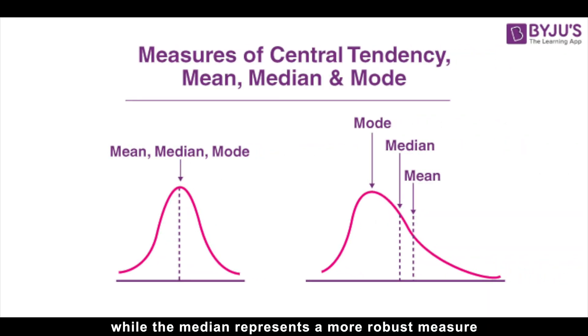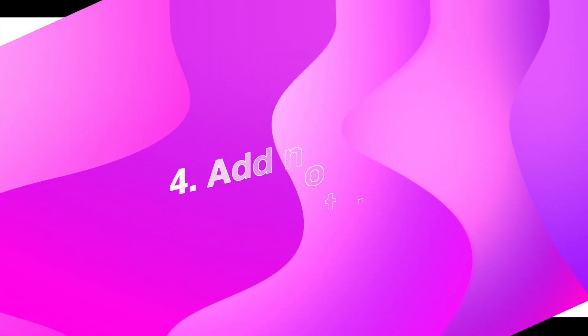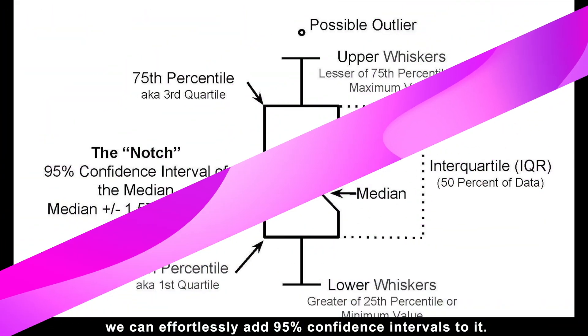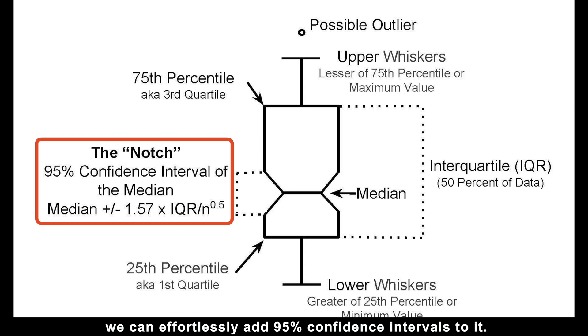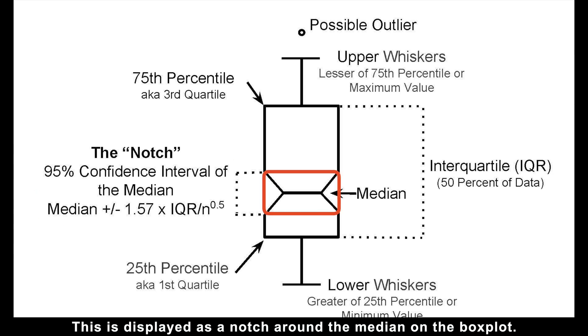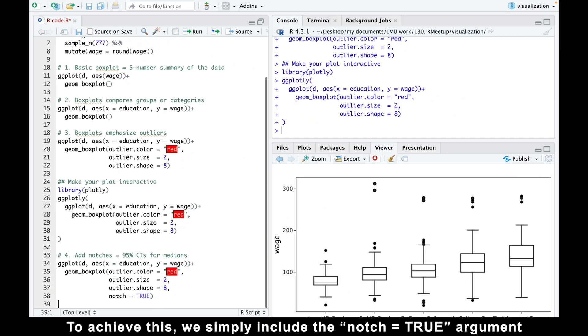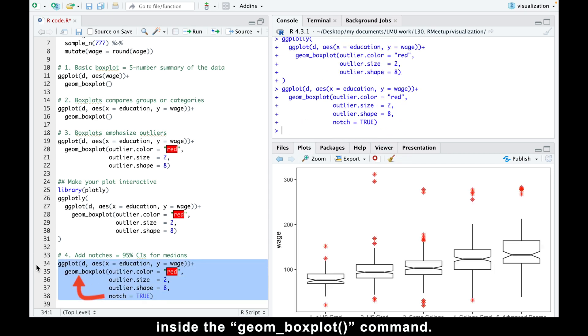Speaking of confidence, while the median represents a more robust measure of central density compared to the mean, to enhance our confidence in the median, we can effortlessly add 95% confidence intervals to it. This is displayed as a notch around the median on the boxplot. To achieve this, we simply include the notch equals true argument inside the geom_boxplot command.